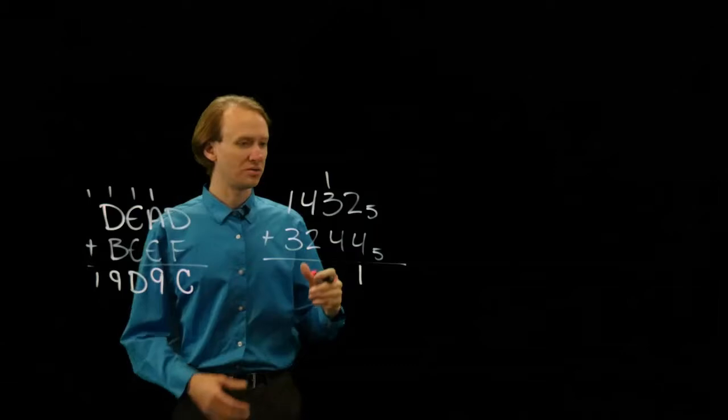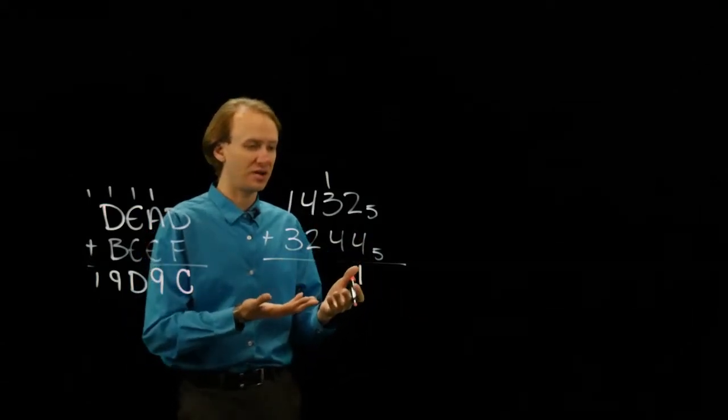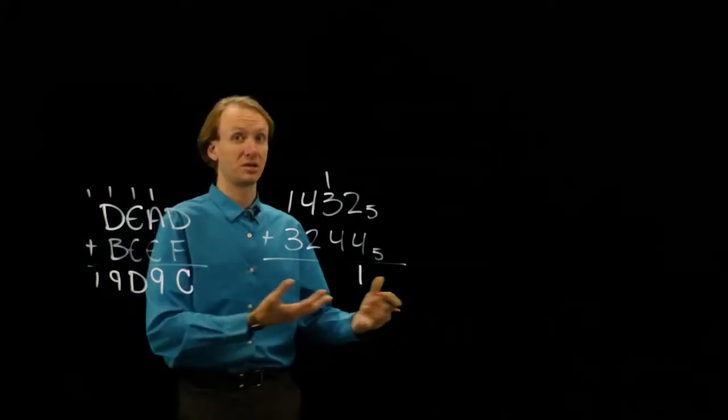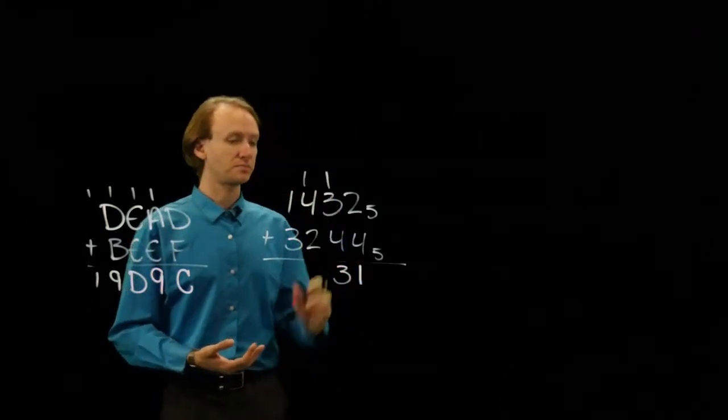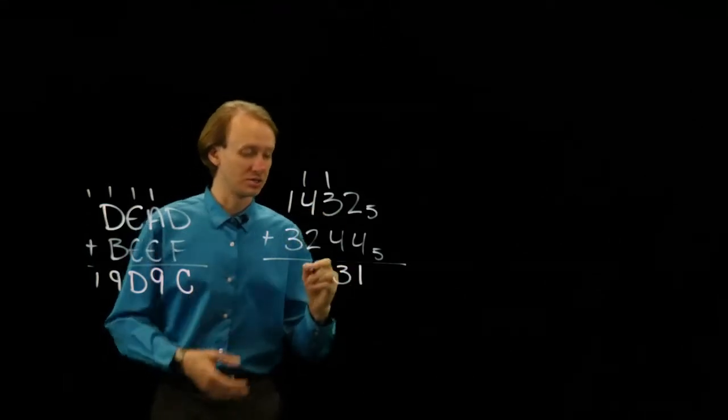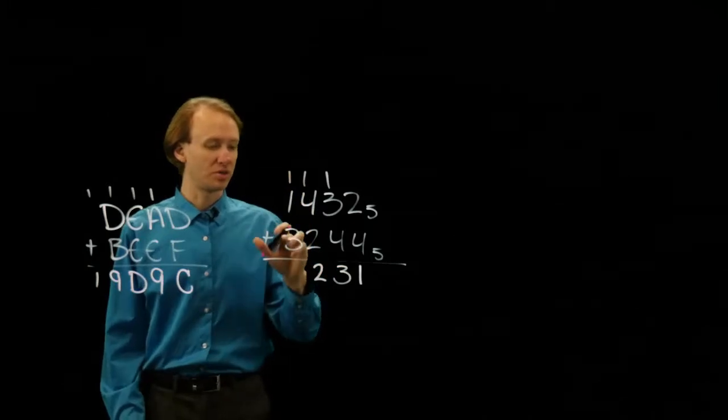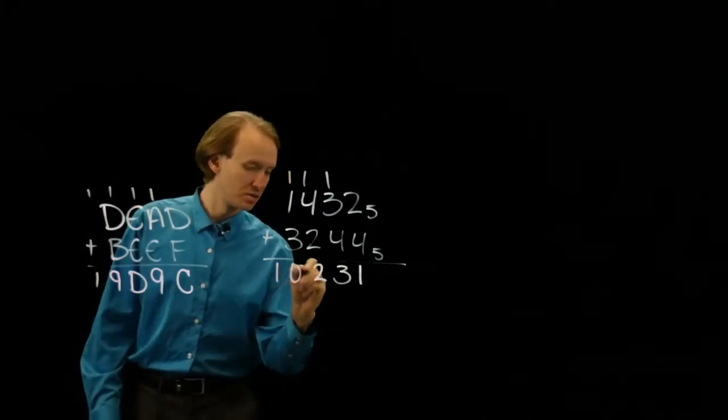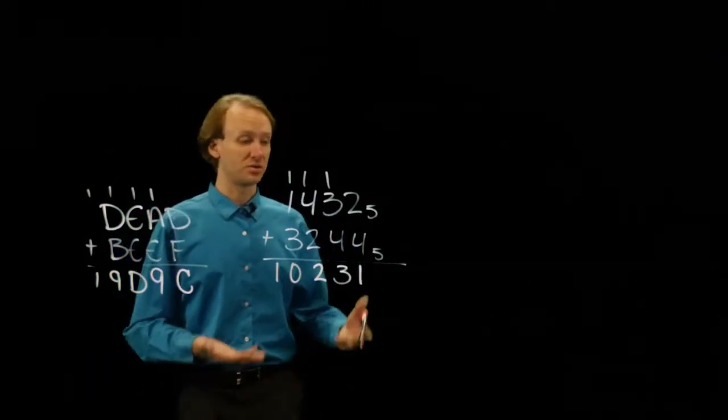3 plus 4 plus 1 would normally give me 8, but again I don't have any 8's in base 5. I have to represent this as 10 plus 3. So I'll write down the 3, carry the 1. 1 plus 4 is 10. 10 plus 2 is 12. 1 plus 1 plus 3 is 5, which is again 10. So I get 10, 2, 3, 1 for my answer in base 5.